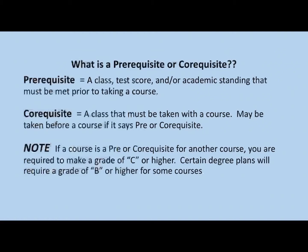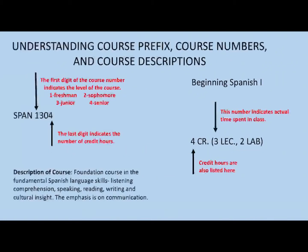Co-requisites are courses that must be taken together. An example would be taking Chemical Principles lecture with the Chemical Principles lab. Note the information about needing a C or better for pre- and/or co-requisites. We want to make sure that you understand course prefix, course numbers, and course descriptions when you view them in your catalog.